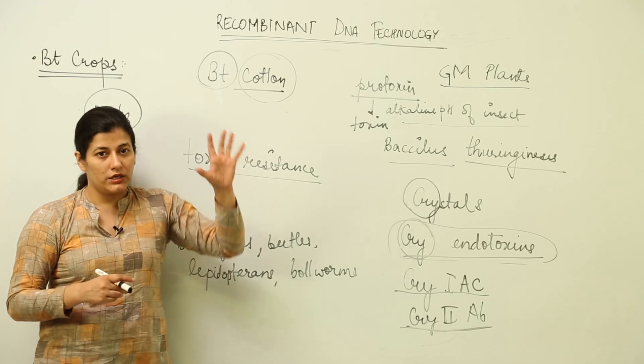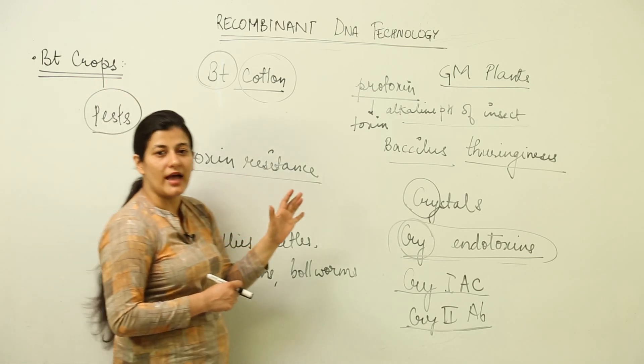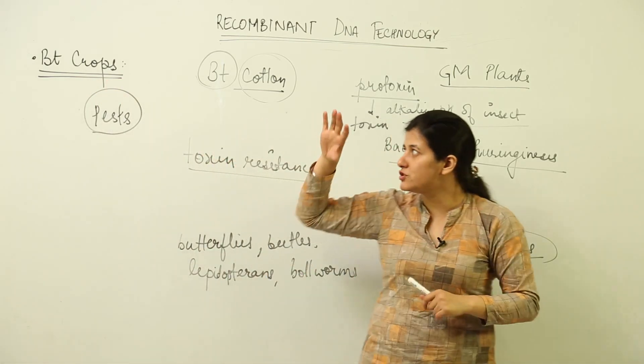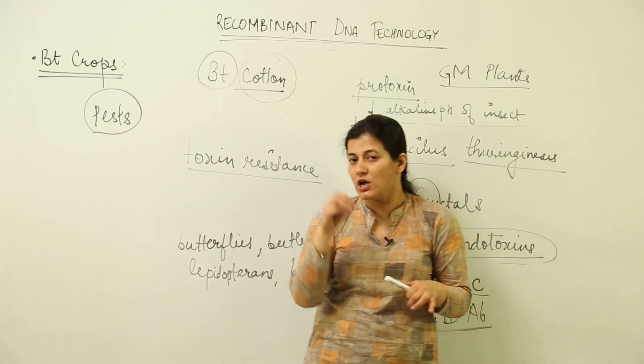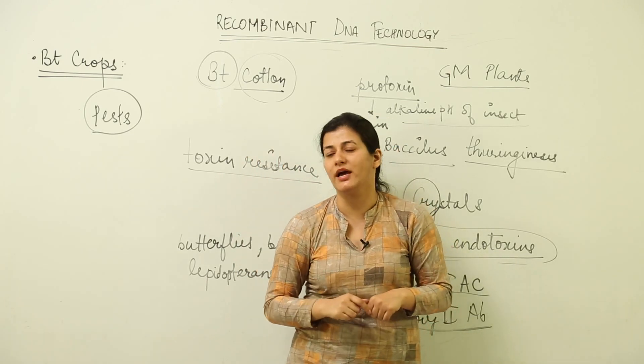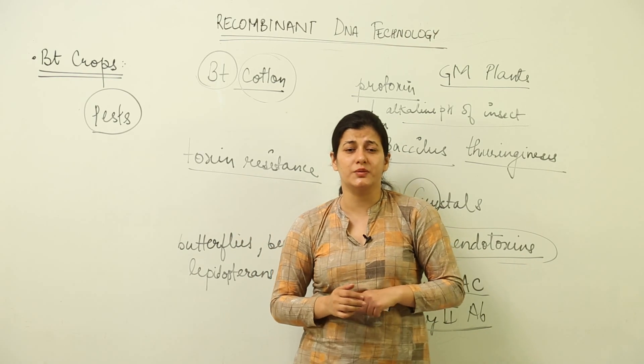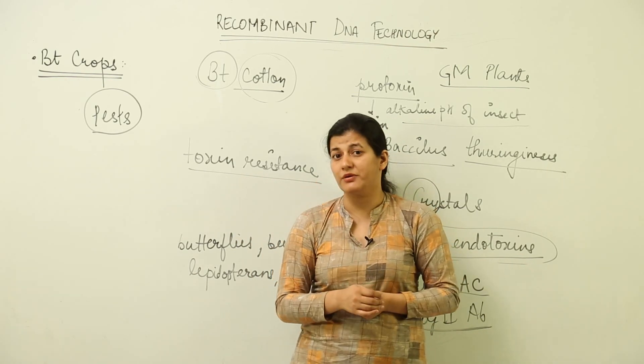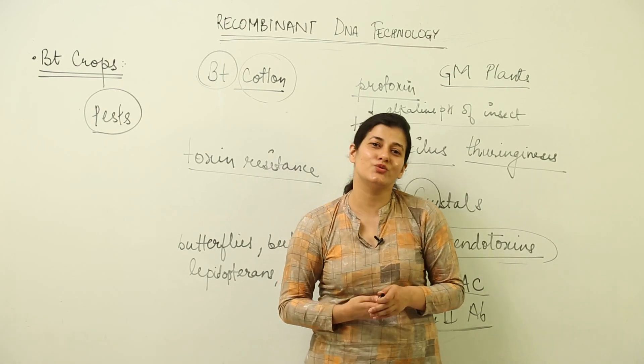This was all about the GM plants and specifically the BT crops that we had to discuss with reference to BT cotton. We got an idea what all other BT crops would be targeting, what is the purpose of introduction of these BT crops, and the shortcomings that we discussed. We are going to see other aspects as well in terms of shortcomings of these genetically modified plants when we study about ethical issues next.